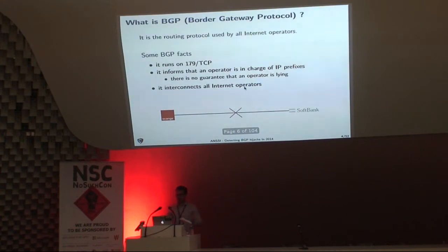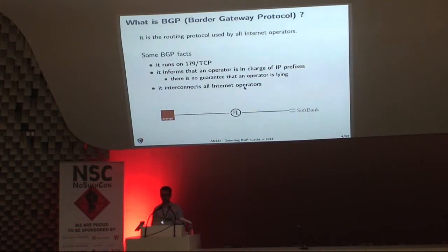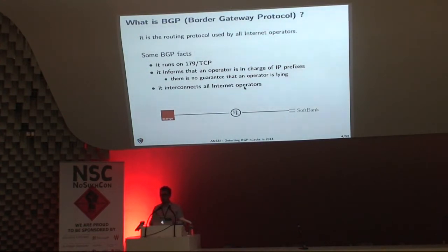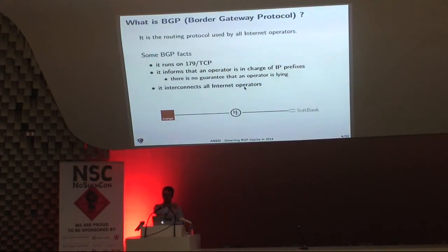So Orange and SoftBank are indeed interconnected using another provider — in this case, Hurricane Electric. Thanks to Hurricane Electric, Orange is able to exchange packets with SoftBank. This is a really simplified view of the internet, which just shows that if you are not able to directly connect to an operator, you can go through a transit operator like Hurricane Electric in order to get full connectivity.